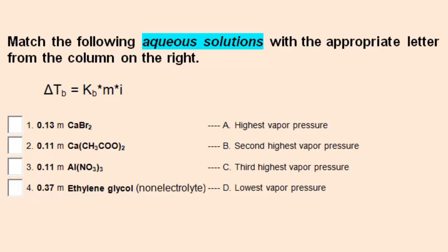We can still use delta T equals KMI to help us determine the relative vapor pressures. Because these are aqueous solutions, K will be the same for all four. Therefore, we can make a relative comparison of these four solutions by simply multiplying the molality times the corresponding i.